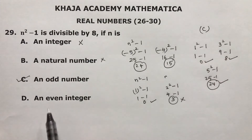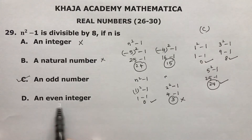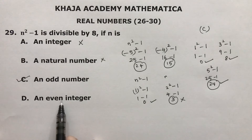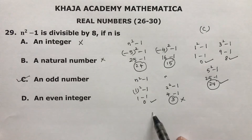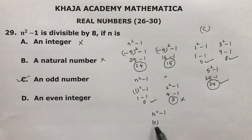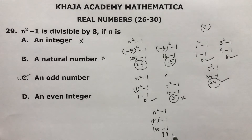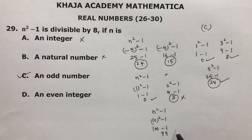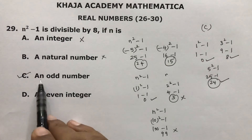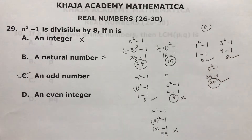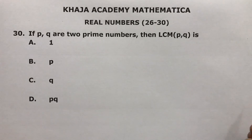To confirm why even integers don't work: take n equals 10. 10 squared minus 1 is 100 minus 1 which is 99, and 99 is not divisible by 8. So the correct option is C — odd number.